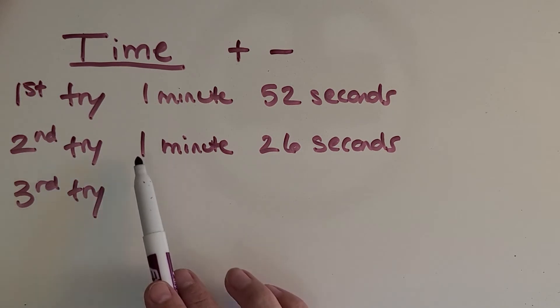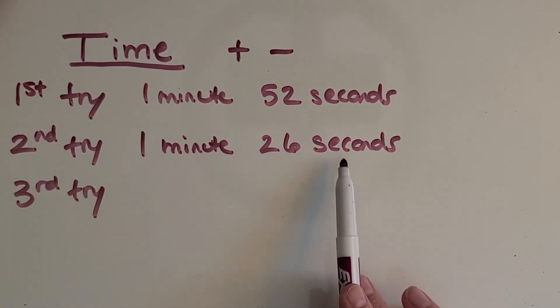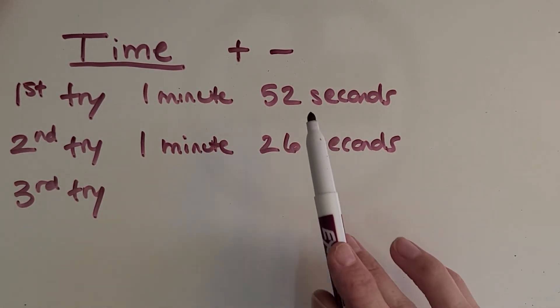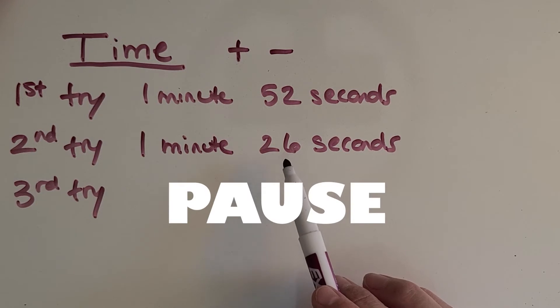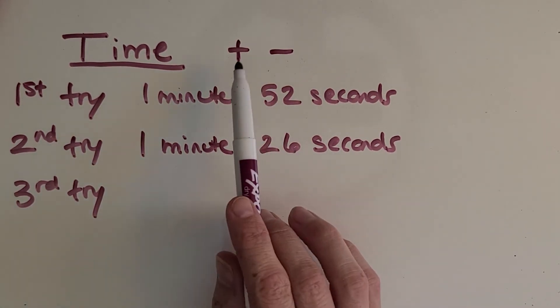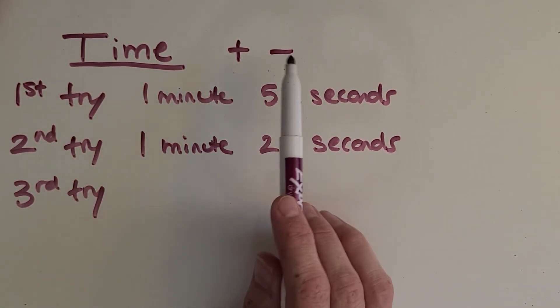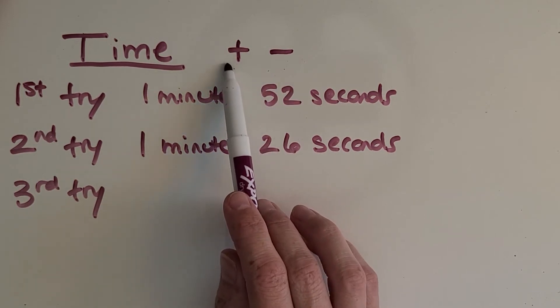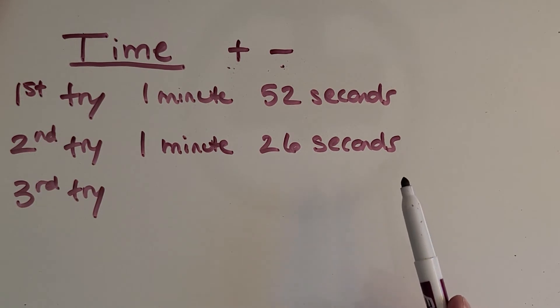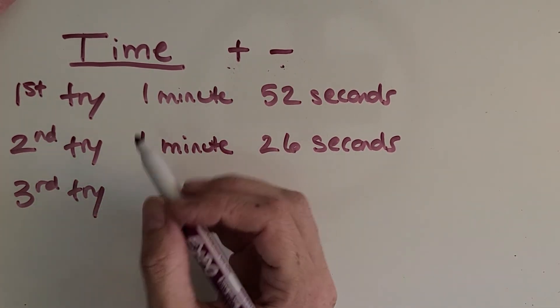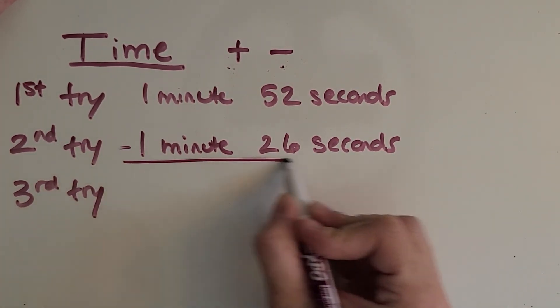So my first try was 1 minute 52 seconds. My second try was 1 minute 26 seconds. Woo! So I want to know how much faster is my second try. Why don't you pause the video and start working on how much faster is my second try. Okay, let's check your work. So first things first. We need to decide are we adding or subtracting. Since I want to know how much faster, I'm going to be subtracting.